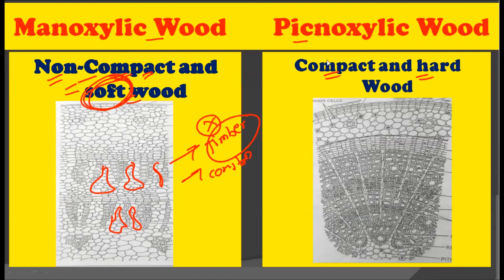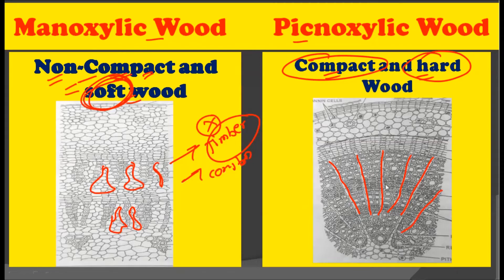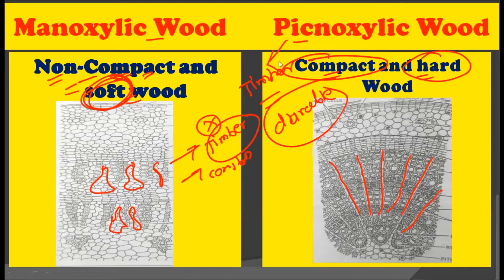On the other hand, Pachyxylic wood is a compact and hard wood. In the picture, you can clearly see there are not so many parenchymatous cells, and the cells are very compactly arranged with each other. This compactness gives Pachyxylic wood a hard strength, which is very durable in nature. Due to this durability, Pachyxylic wood is largely used as timber and for construction purposes.